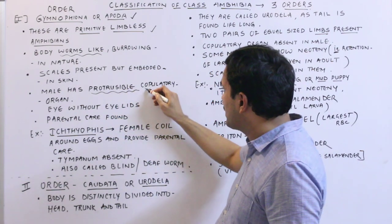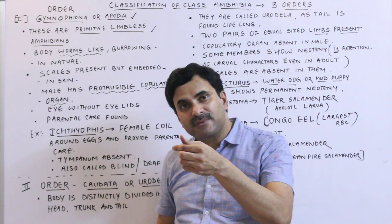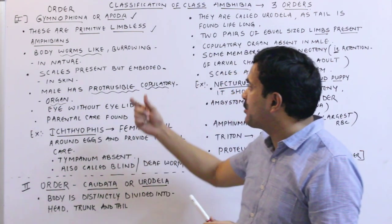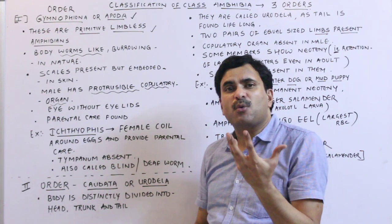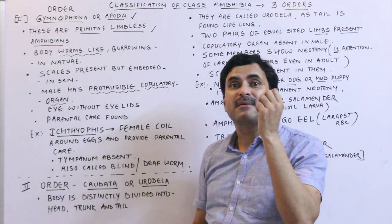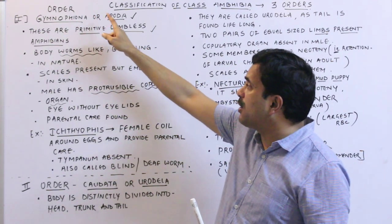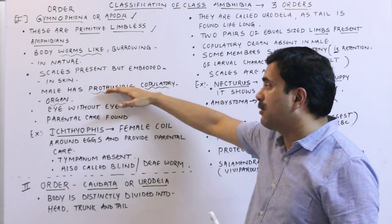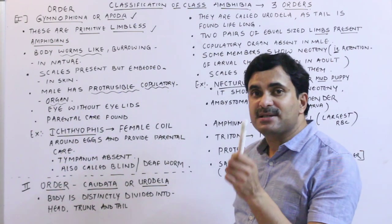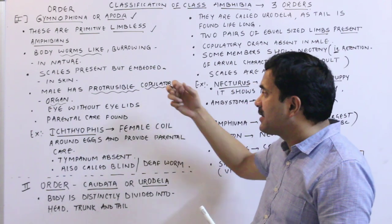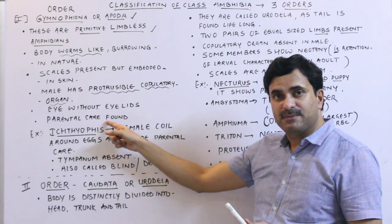The male has a protrusible copulatory organ — one which can come out and revert back into the body. In the general characters, we say the copulatory organ is absent because the frog is the main member of Class Amphibia and in frogs it is absent. But here in Order Gymnophiona/Apoda, the male has a protrusible copulatory organ. Also, eyes are without eyelids in the members of Apoda, and parental care is found.